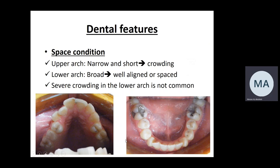In terms of dental features and space conditions: patients with class three malocclusion typically have a hypoplastic maxilla — small and narrow transversely and short in length — contributing to lack of space, so most cases have crowding in the upper arch. The lower arch is usually well developed with spacing, well-aligned teeth, or minimal crowding. The classical space condition is a crowded upper arch and a well-aligned or spaced lower arch.